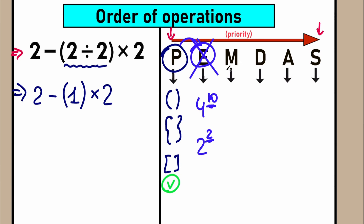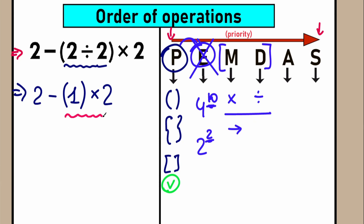The next step is the multiplication and division group — this is one common group. M stands for multiplication, D stands for division. Multiplication and division are tied for priority, so we need to evaluate them in a strict order from left to right. For example, with an expression like 2 times 2 divided by 3, we first encounter multiplication on the left, so we get 4 divided by 3. And for an expression like 2 divided by 2 times 3, division comes first from the left, so 2 divided by 2 equals 1, times 3 equals 3.